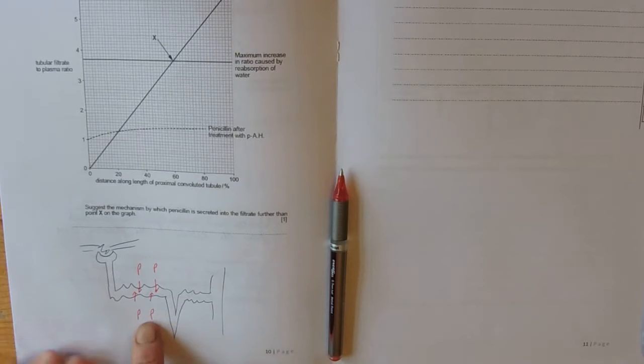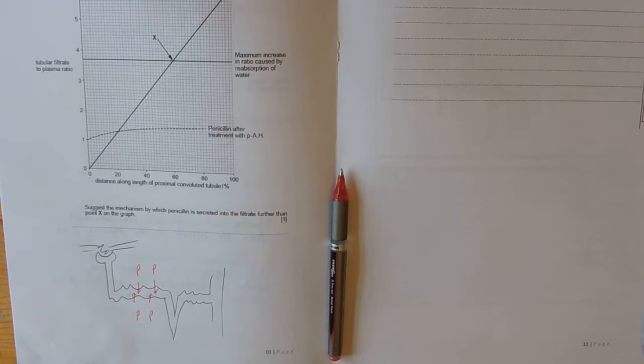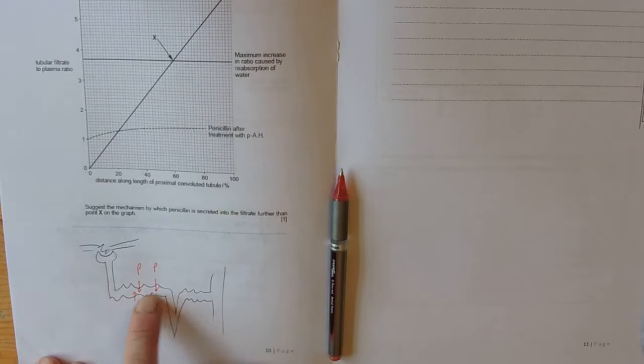So, this is what's happening. Penicillin is being transported into this proximal convoluted tubule in the nephron. That's why the graph is going up. The graph is showing, essentially, how much is in this tubule.